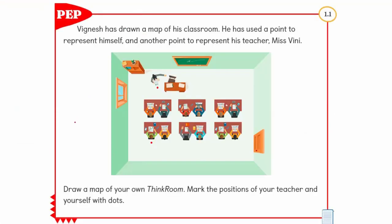Here is a PEP activity, children. Vignesh has drawn a map of his classroom. He has used a point to represent himself and another point to represent his teacher, Miss Vigny. In the same way, you have to draw a map of your own classroom. Mark the positions of your teacher and yourself with dots.